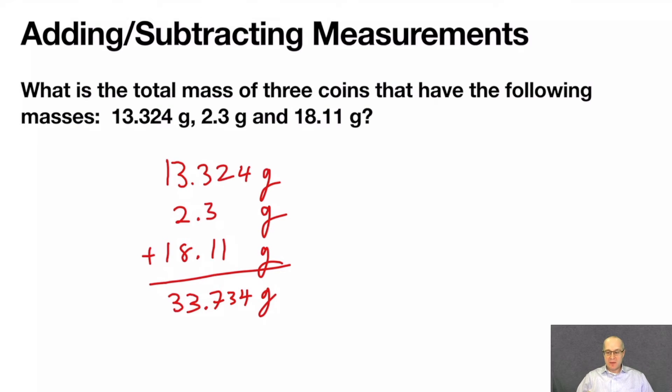Now that's not correct. We have to know the rule. The rule says, whenever you're adding and subtracting measurements, the decimal points are what matter. You have to round your final answer to the number or the measurement with the fewest decimal points.